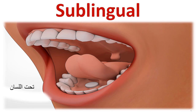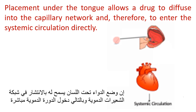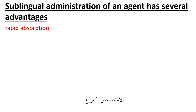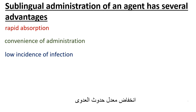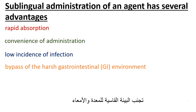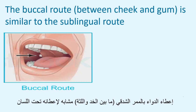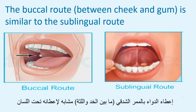Sublingual placement under the tongue allows a drug to diffuse into the capillary network and therefore to enter the systemic circulation directly. Sublingual administration has several advantages, including rapid absorption, convenience of administration, low incidence of infection, bypass of the harsh gastrointestinal environment, and avoidance of first-pass metabolism. The drug is absorbed into the superior vena cava. The buccal route, between the cheek and gum, is similar to the sublingual route.